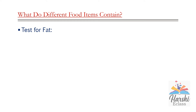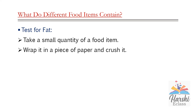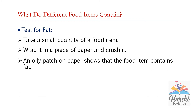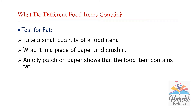Test for fat. Take a small quantity of your food item, wrap it in a piece of paper, and crush it. A patch will appear on the paper. Sometimes the food item contains a little water, which can also form a patch-like structure. So let it dry for some time. Observe if there is any oily patch after drying — that indicates that the food item contains fat.